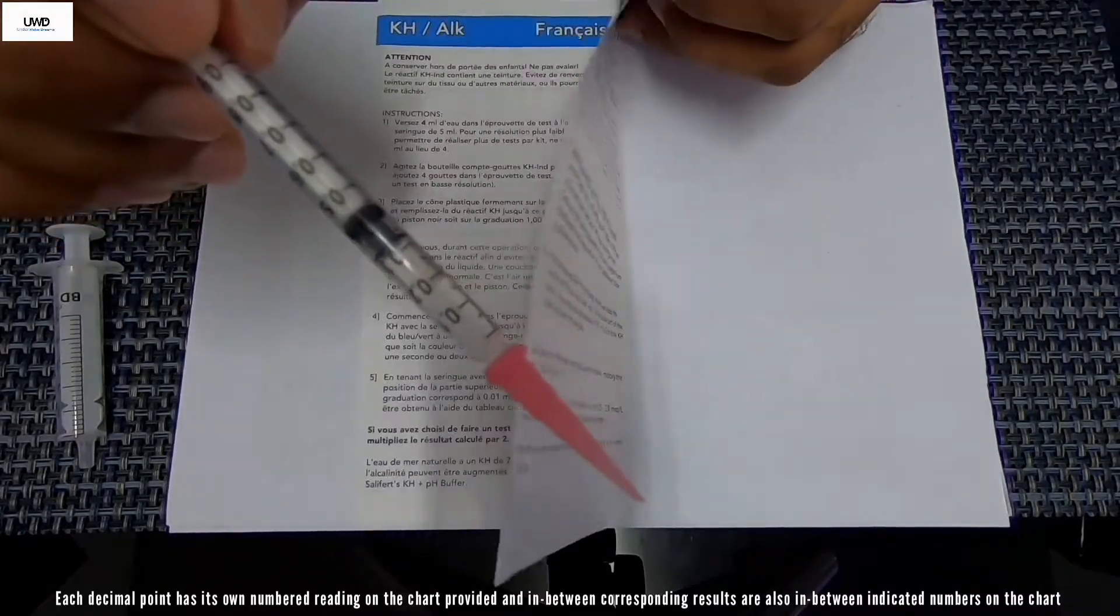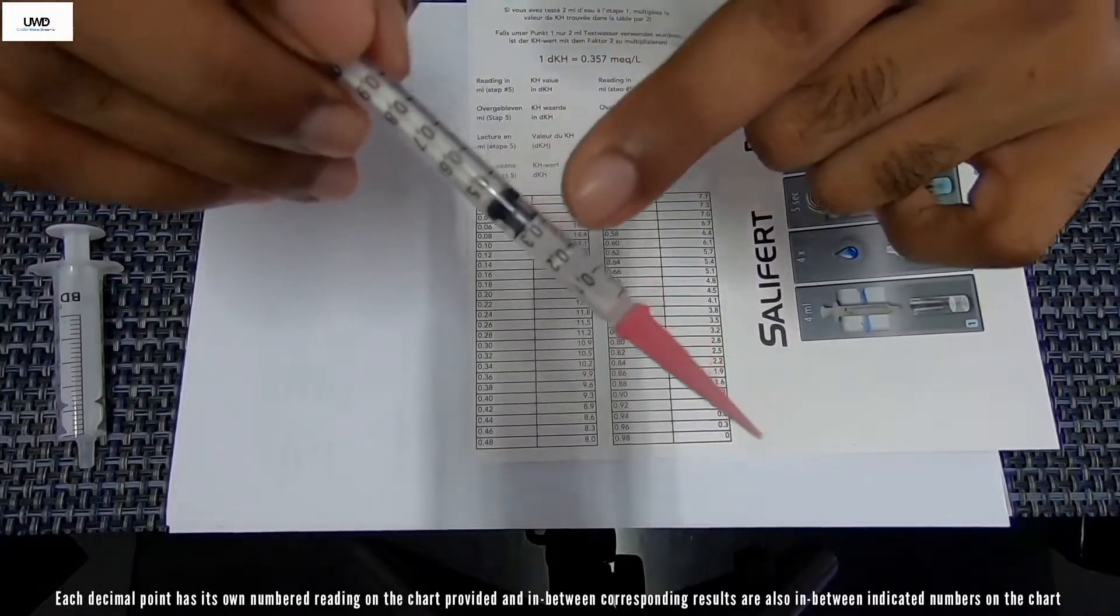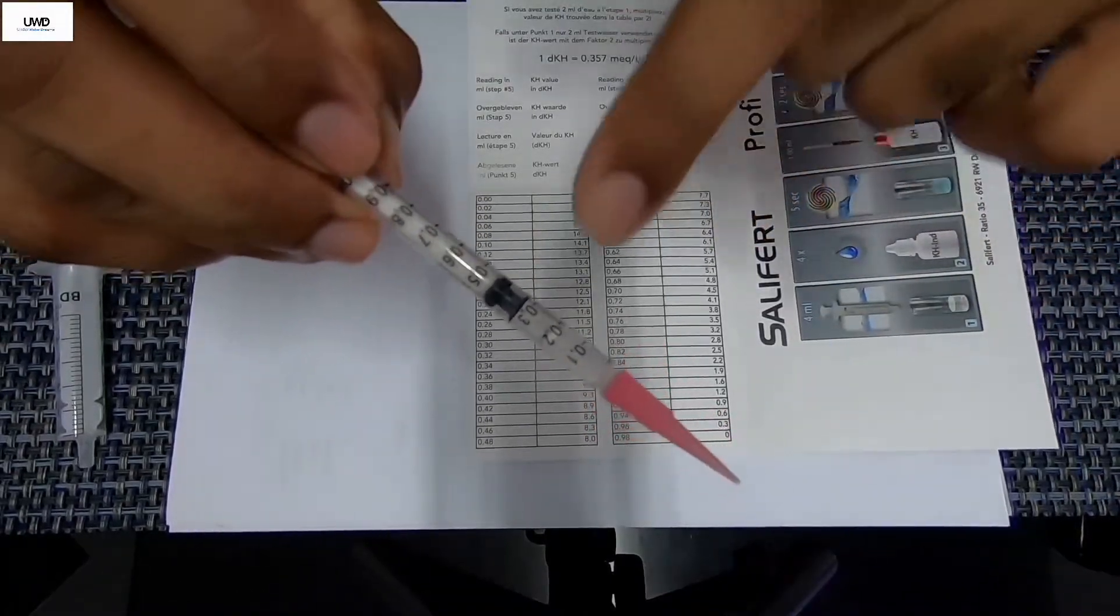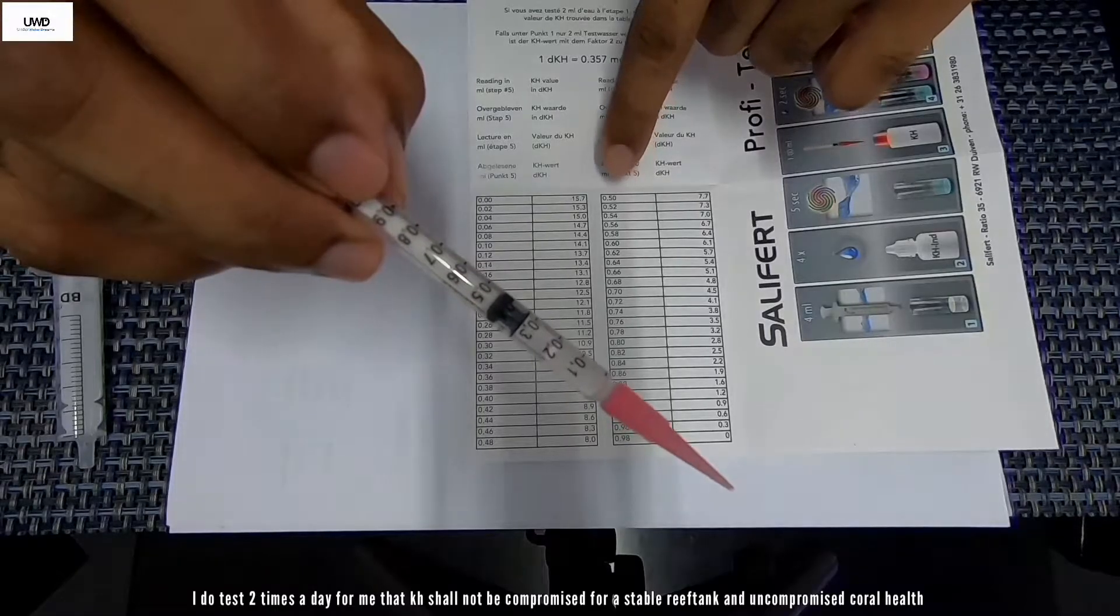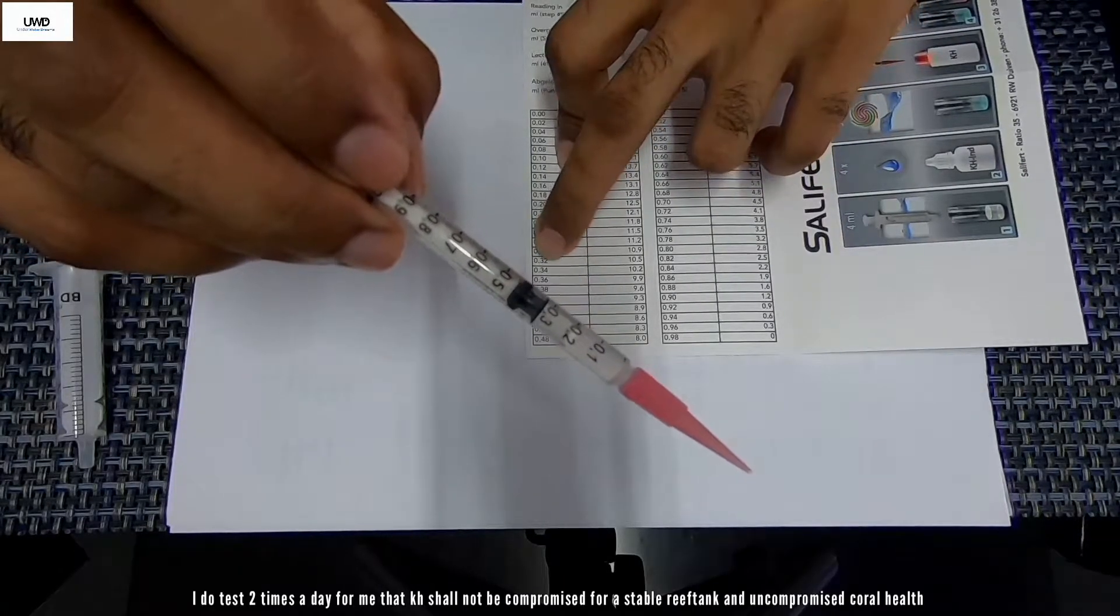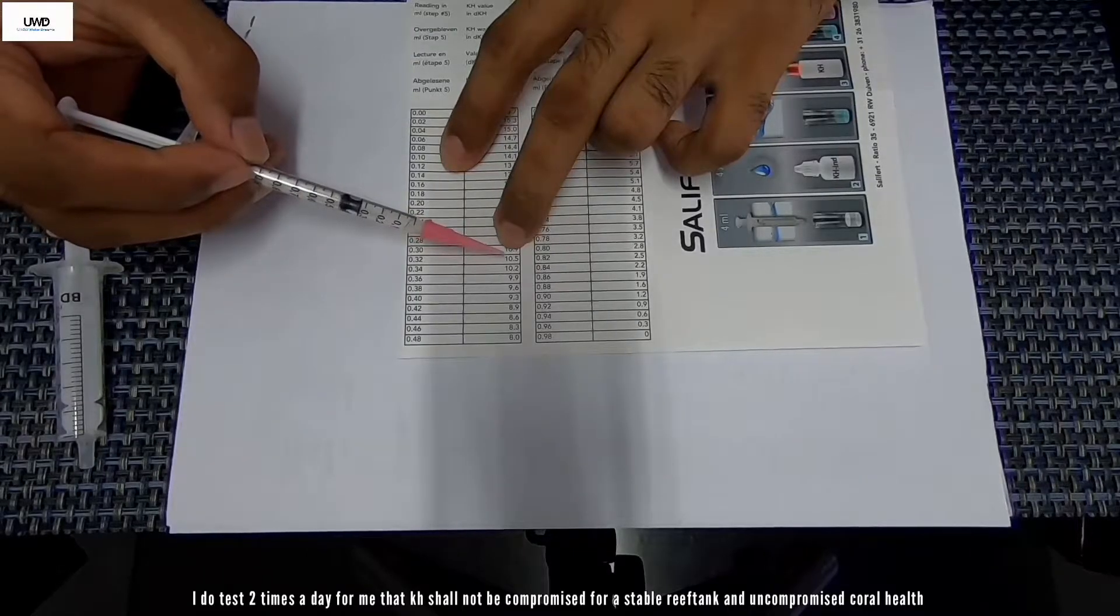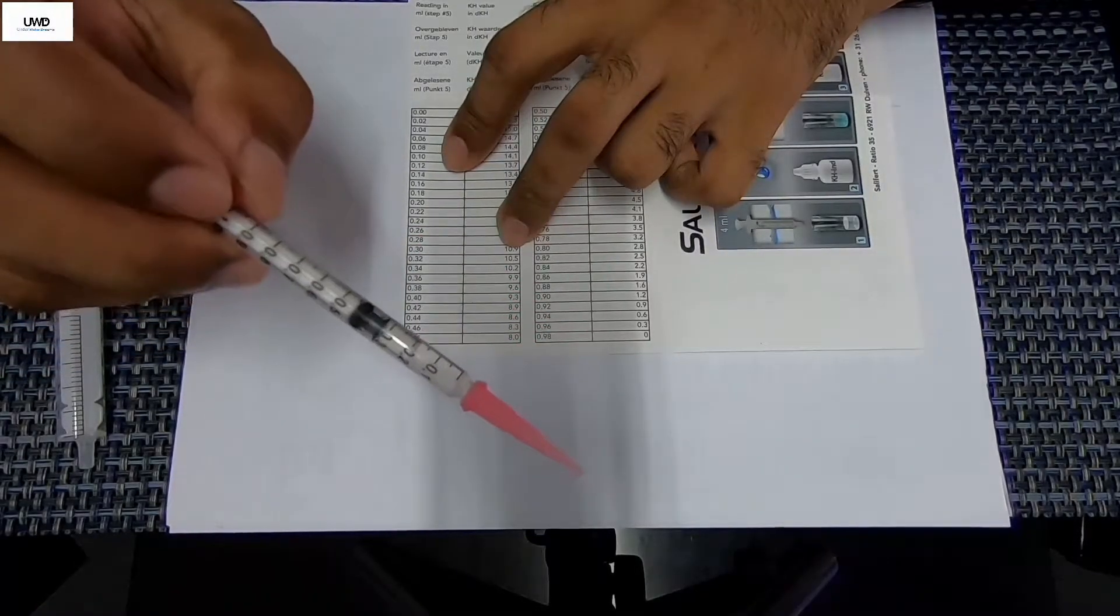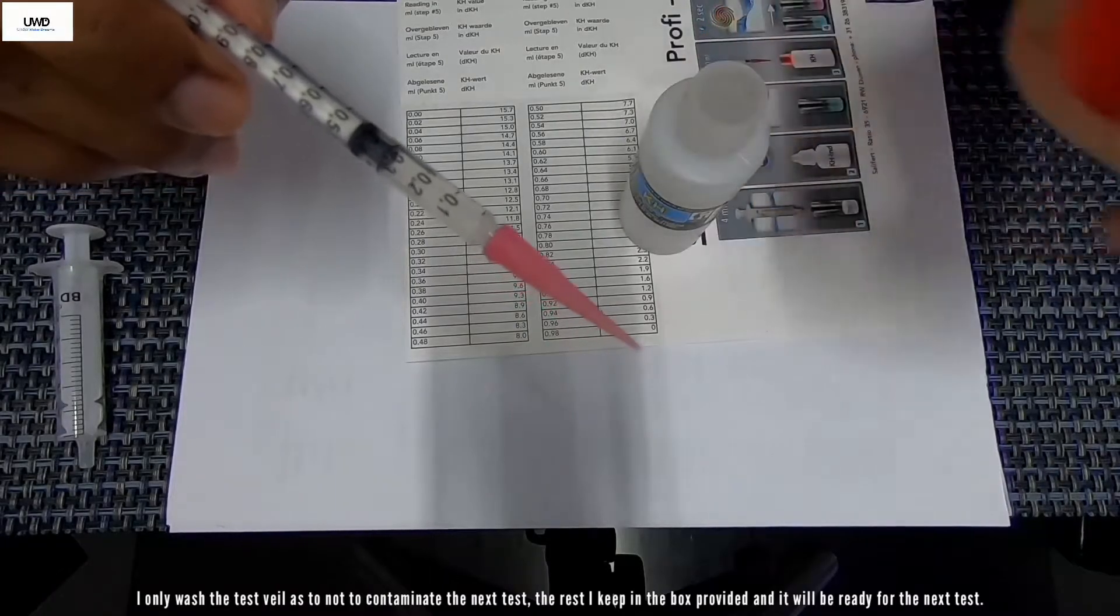What we're going to do is we're going to be referring back to this chart here. It's going to correspond to the reading here and then directly to your level of KH or dKH inside your reef tank. Say there's 3.2, we're just going to find 3.2, that's about it here. 3.2, 3.4, so my level, KH or dKH level, is about 10.5 or 10.2. So I can put up 10.5 or 10.2. That's my level of alkalinity in my reef tank.